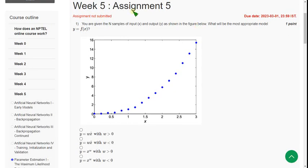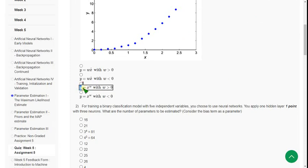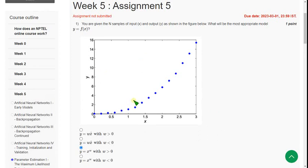So let's see the first question. First of all, I will give the solutions for what I have got and later I will give you the probable solutions for remaining questions. For the first question, you are given n samples of input x and y. The most appropriate model for y equals f of x - for this question, what I have got is option 3: y equals x power w such that w greater than 0. So mark third option. Friends, everything is my probable solution only. Use it as reference purpose.